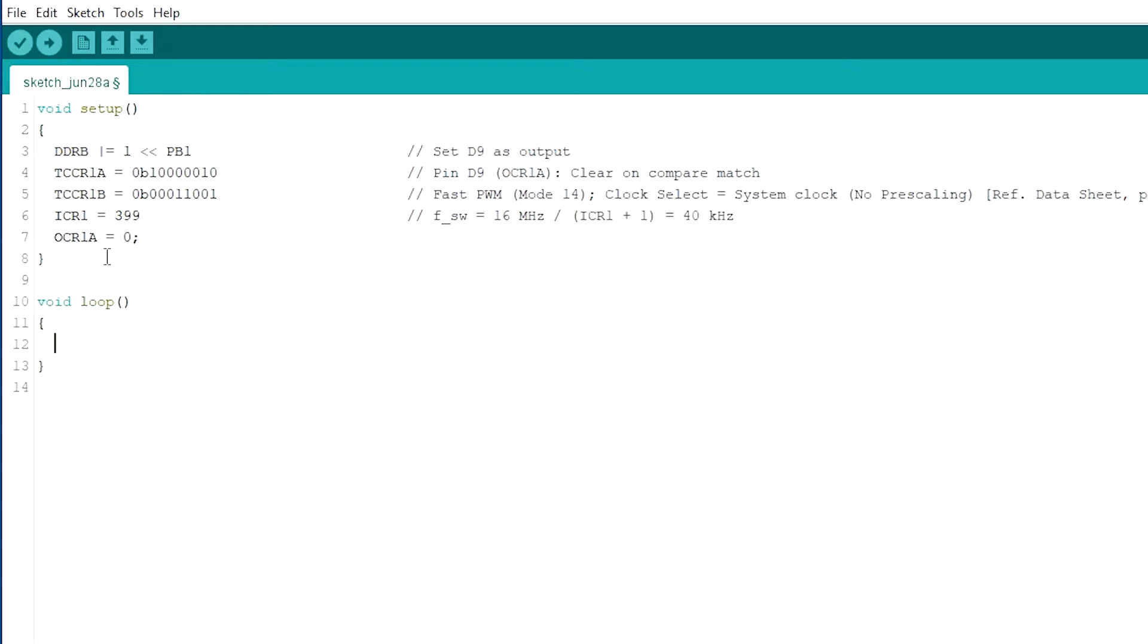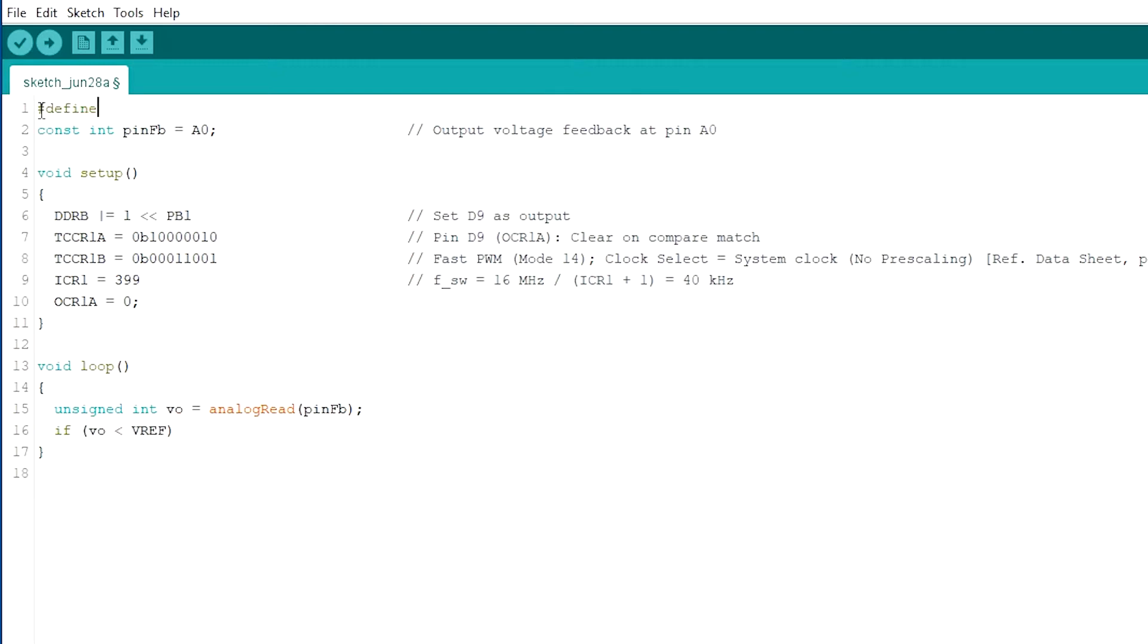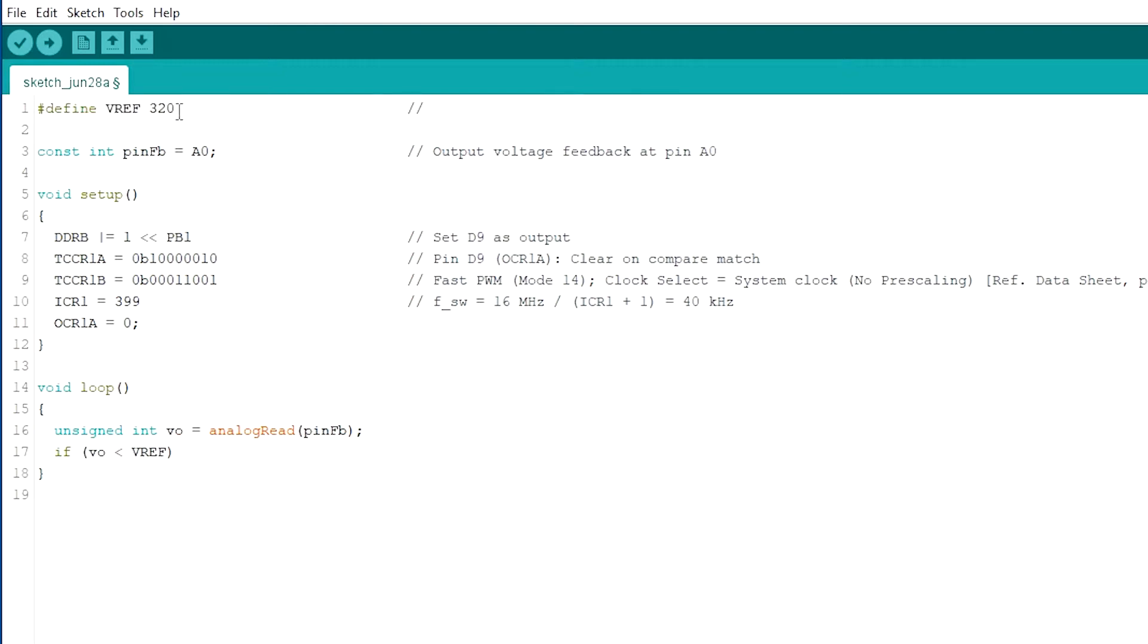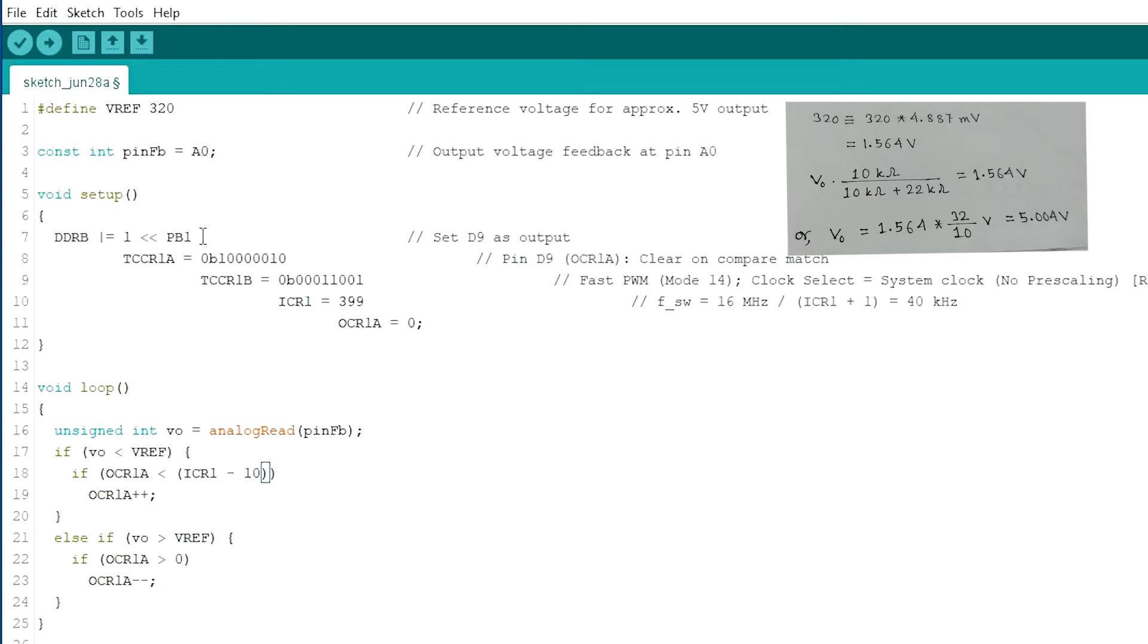In the loop, the output feedback voltage will be measured at analog pin A0 and duty cycle will be increased by increasing the value in the output compare register 1A, if the feedback voltage is less than the set voltage and vice versa. I am setting the reference voltage, it's not the voltage to be correct, it's the ADC reading to 320. It should give the output voltage of around 5 volt.